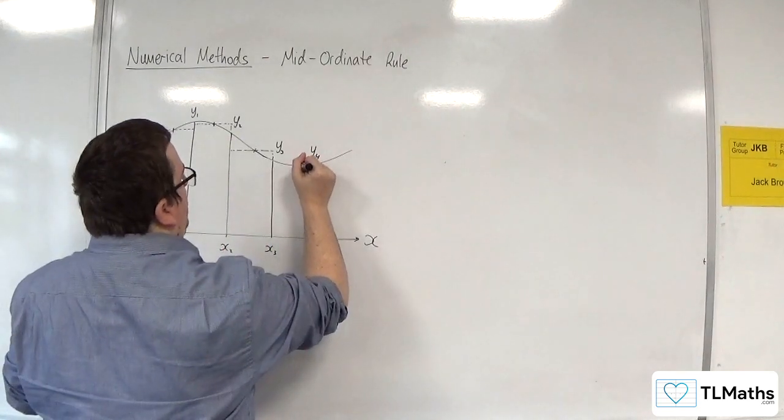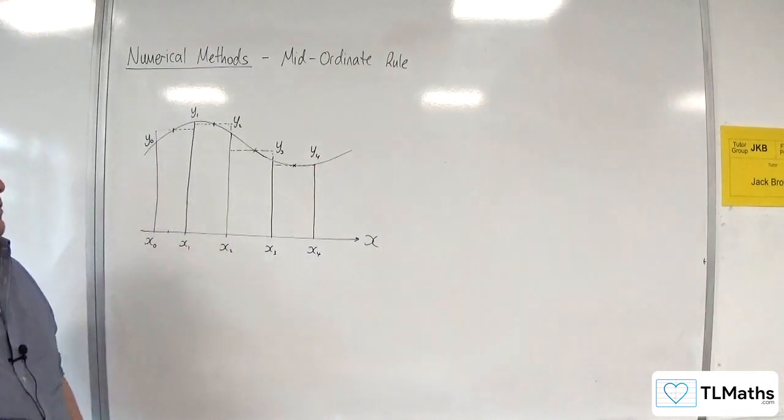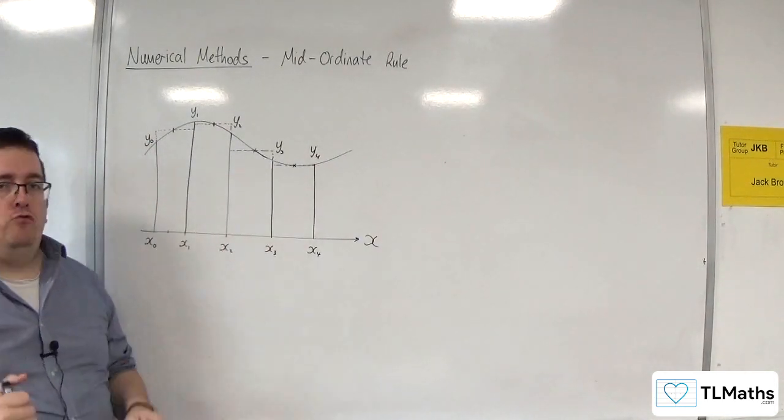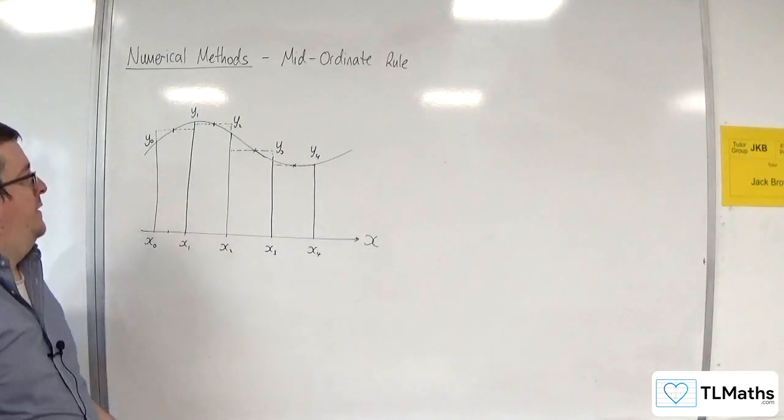Then we get the midpoint there and that rectangle. We add the areas of those four rectangles together and we will get an approximation for the area.